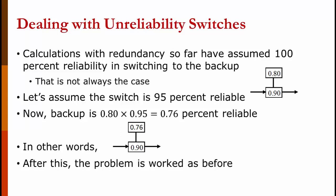When the switch is less than 100% reliable, then that reduces the reliability of the backup component. So if you had a backup with an 80% reliability and the switch only had a 95% reliability, the backup would actually have a 76% reliability. Once you've accounted for the unreliable switch, the problems work the same.